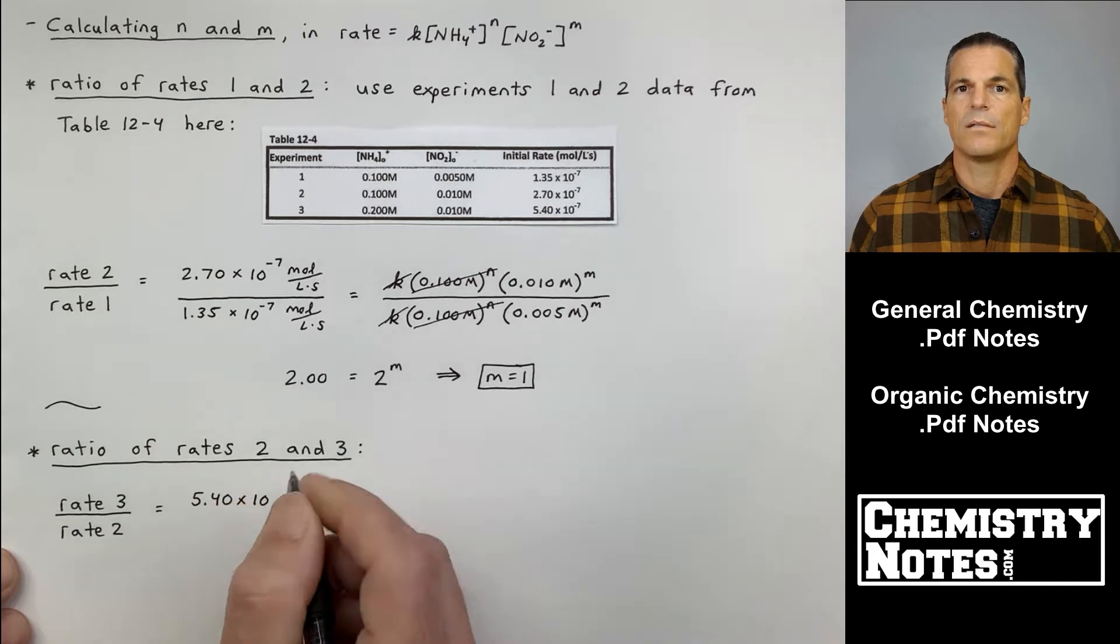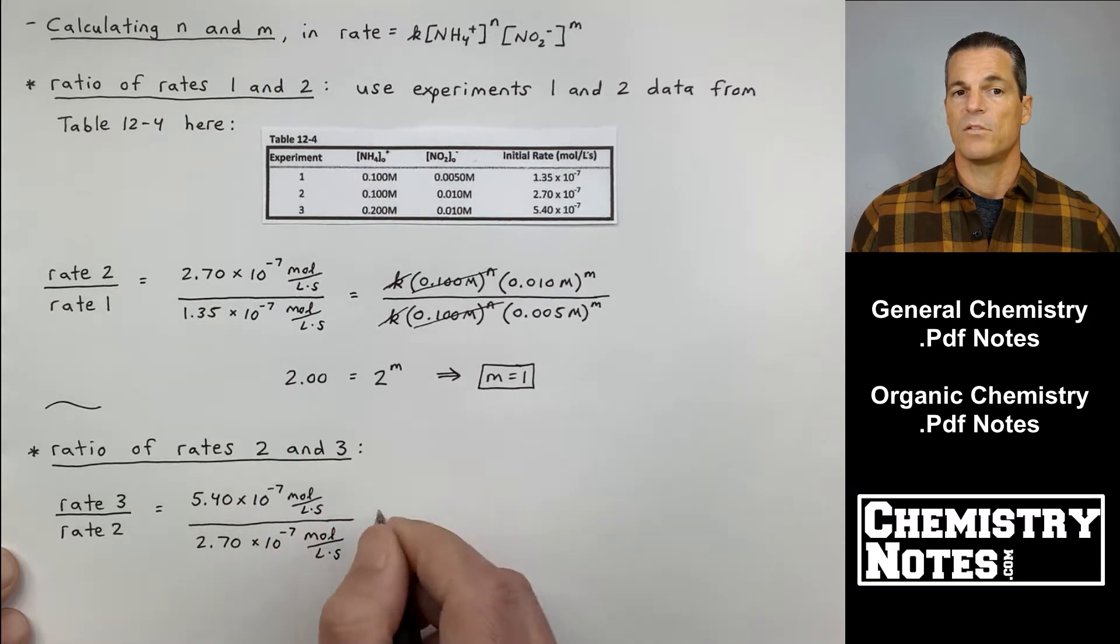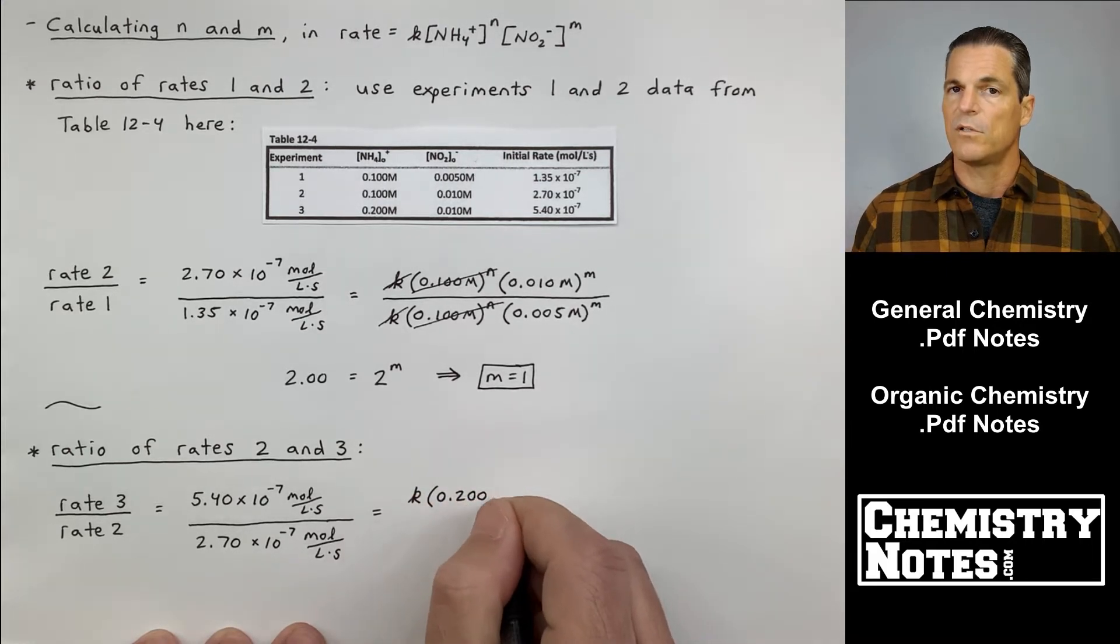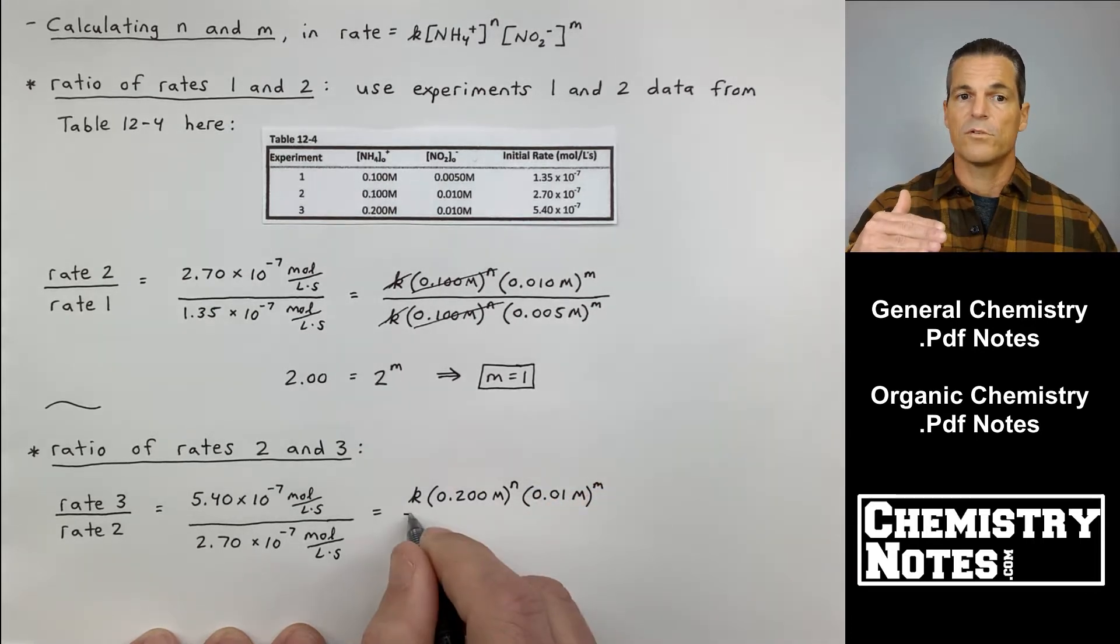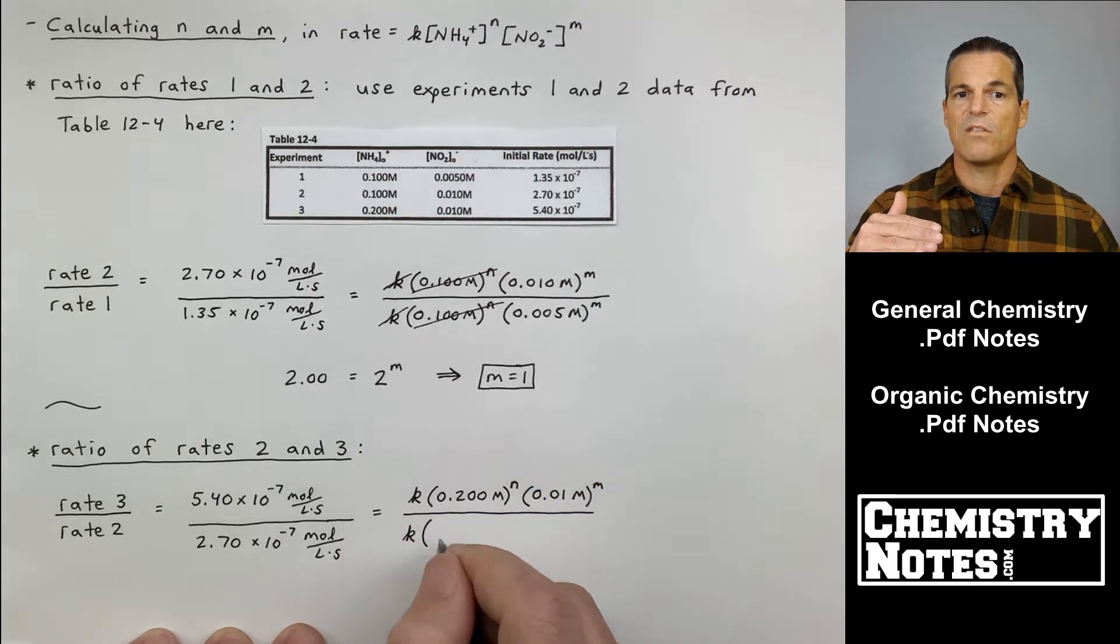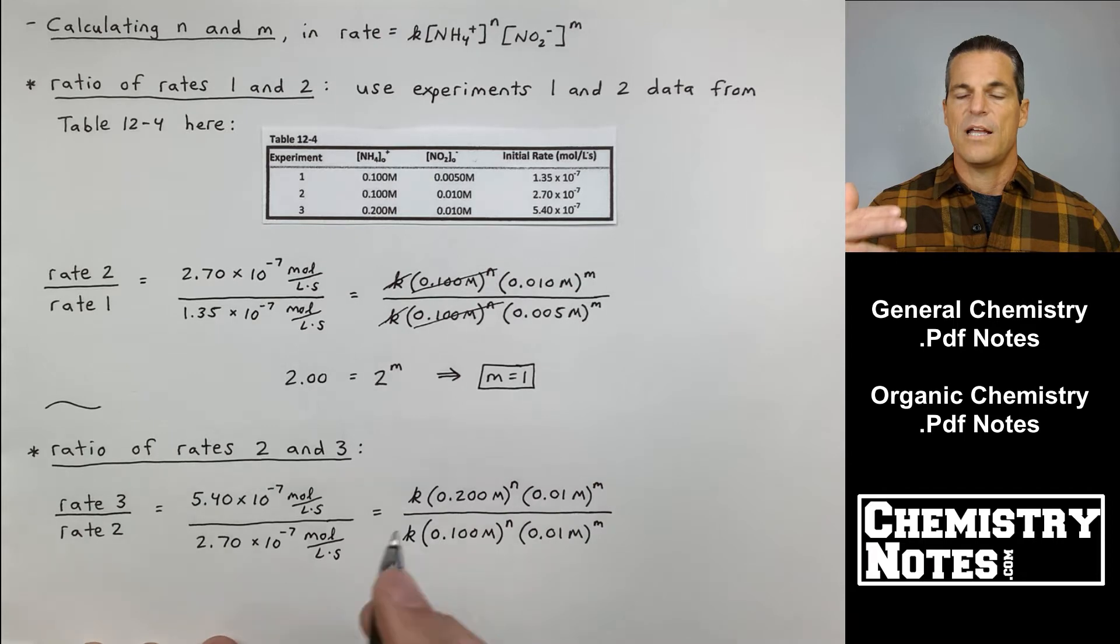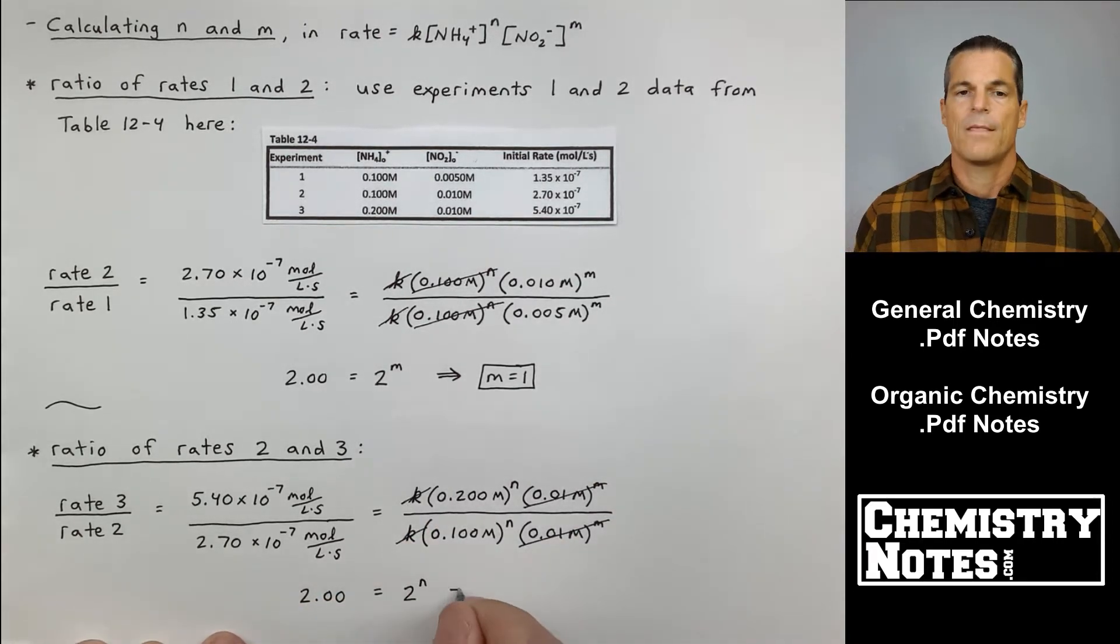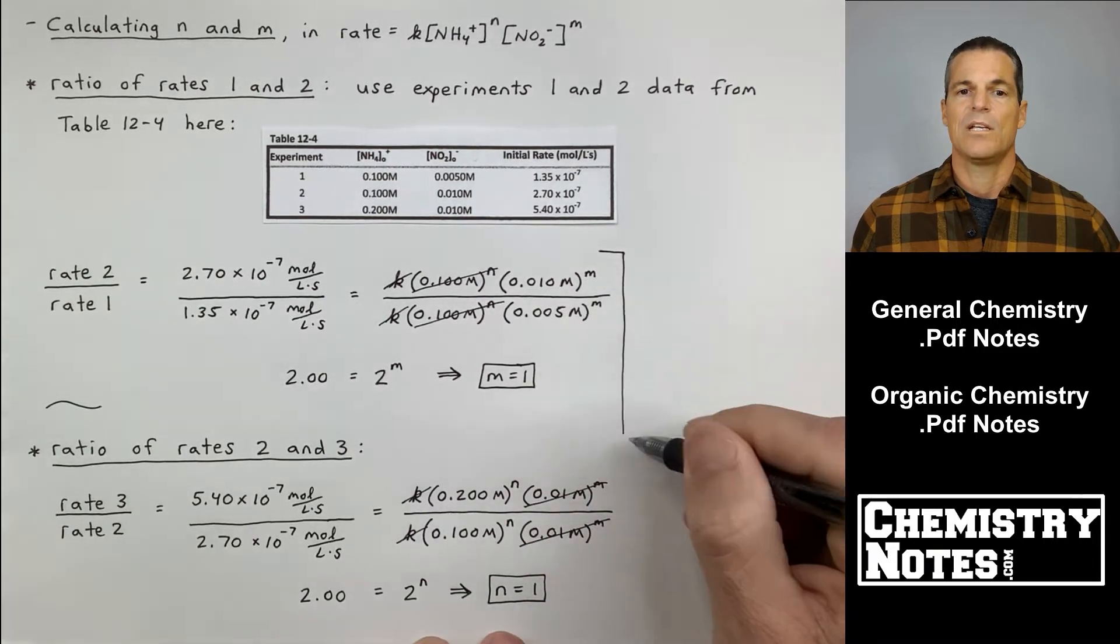That's my rate equals K times the concentration of NH4+ in the second experiment, which is 0.100 molar to the N times 0.010 molar to the M. Then for the rate for experiment number one, I put in my appropriate concentrations for NH4+ to the N. Look at all the cancellations. If I clean this up, it's 2.00 equals 2 to the M. Well, M has to be 1.